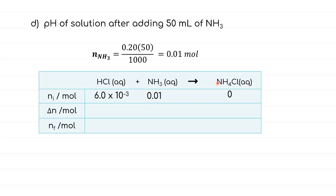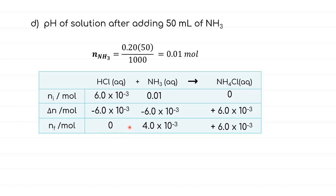Plugging into the ICE table: HCl = 6.0 × 10⁻³ mol, NH₃ = 0.01 mol, NH₄Cl = 0. Between these two, HCl has the lower value and is the limiting reactant. So Δn = −6.0 × 10⁻³ for both HCl and NH₃, and +6.0 × 10⁻³ for the product. Final moles: HCl = 0 (all acid used up), NH₃ = 4.0 × 10⁻³ mol (excess), NH₄Cl = 6.0 × 10⁻³ mol.